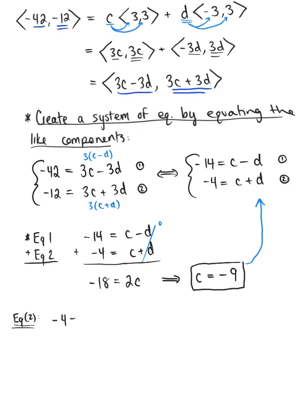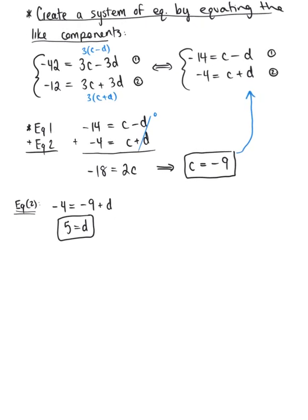So plugging this in, I'm going to have negative 4 is equal to minus 9 plus d. And if we add 9 to both sides, we see that our unknown scalar d is 5. So we have officially determined the scalars for our linear combination, which allows us to write our final answer.